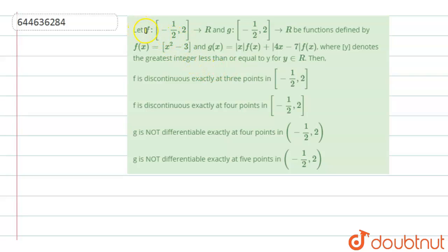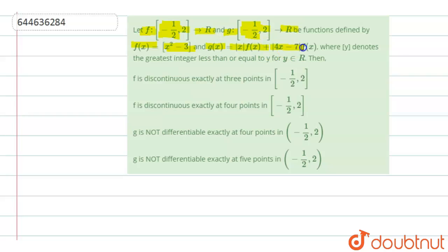Today we are going to discuss one more question. The question says that f is from the closed interval [-1, 2] to ℝ, and g is from the closed interval [-1/2, 2] to ℝ, defined by f(x) = ⌊x²-3⌋ (greatest integer function of x²-3), and g(x) = |x|·f(x) + |4x-7|·f(x), where the bracket denotes the greatest integer less than or equal to y for y ∈ ℝ.